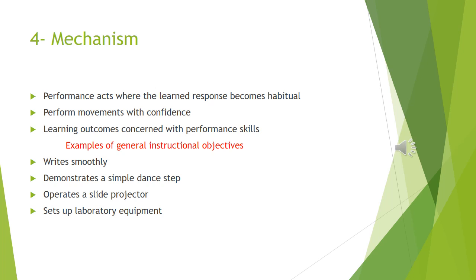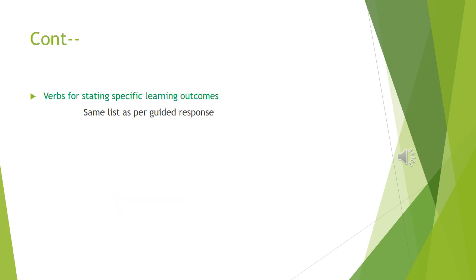The learning outcomes at the mechanism level are concerned with performance skills of various types. Examples for stating general instructional objectives include: writes smoothly, demonstrates a simple dance step, operates a slide projector, and sets up laboratory equipment.